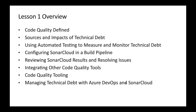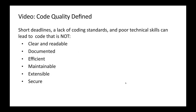Code quality is defined as a lack of coding standards and poor technical skills that can lead to code that is very bad, not readable, not documented, not efficient to use, not maintained properly, and not secure. These are examples of when your code quality is getting bad. You can identify all these things with the help of code quality tools such as SonarCloud, SonarQube, WhiteSource Bolt, and many other tools in the market.